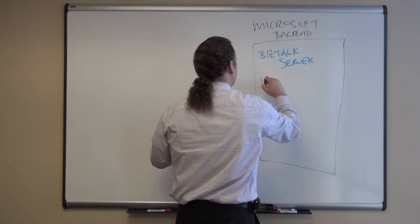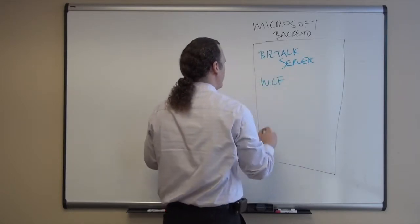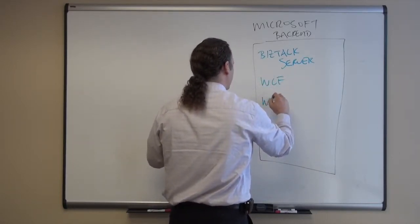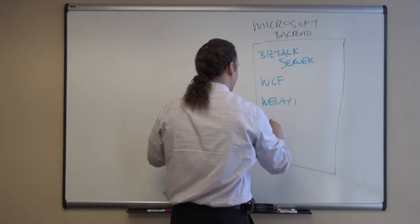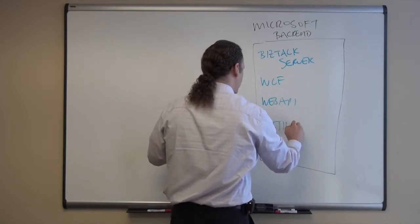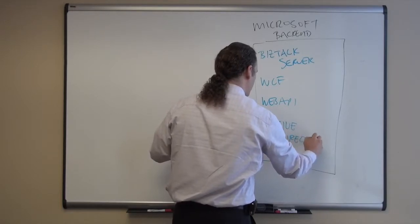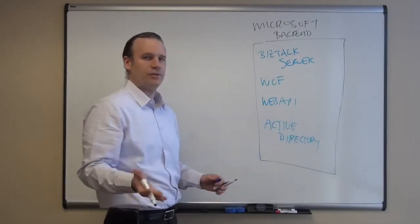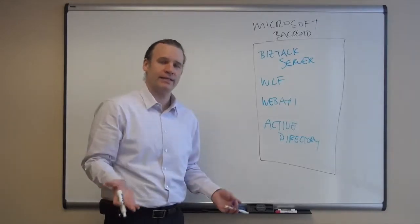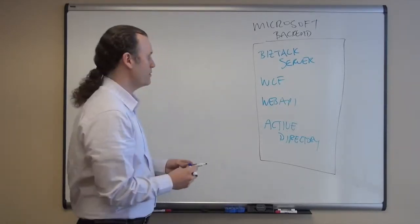We also have things like WCF to build services. We also have things like Web API. And for security of course we have Active Directory. So this gives you an idea of some of the key technologies that you have running in your environment and some of the key technologies that make up a typical Microsoft backend.